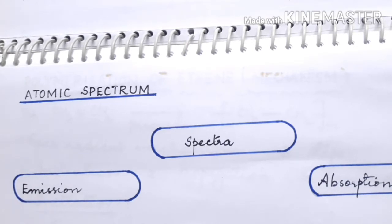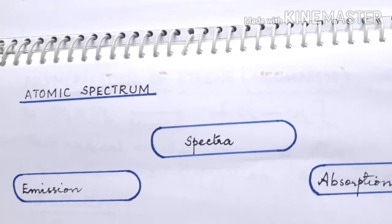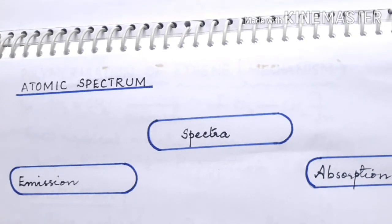When atoms absorb energy, they jump to higher energy levels and the atom is said to be in the excited state — a highly energized state where the atoms become unstable. The unstable atoms then try to come back by releasing energy, and this is called emission spectrum. Atomic spectra can be of two types: emission spectrum and absorption spectrum.